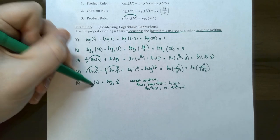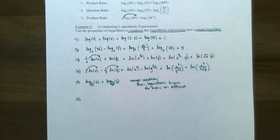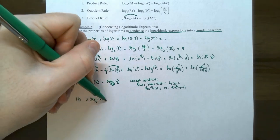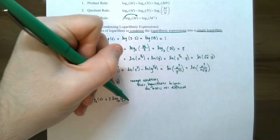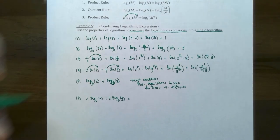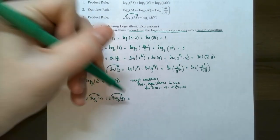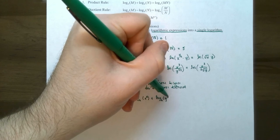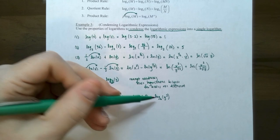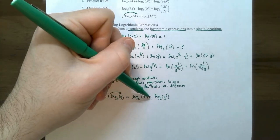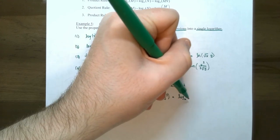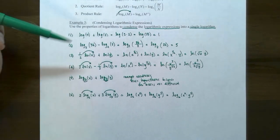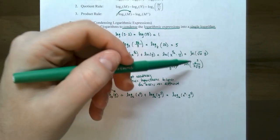One more: two log base six of x plus three log base six of y. The logarithms have the same base, so we can condense. Make the coefficients into powers: log base six of x squared plus log base six of y cubed. They have the same base and there's a plus between them, so use the product rule: log base six of x squared times y cubed. That's simplified completely.